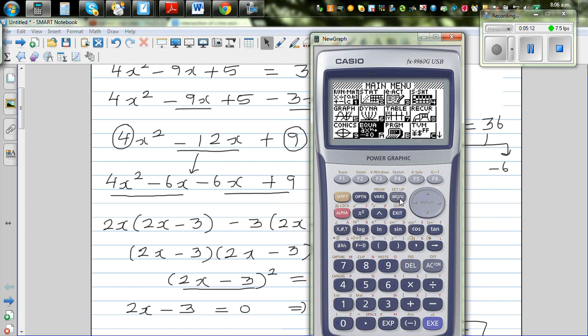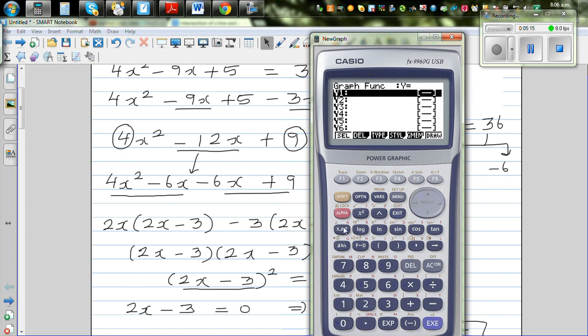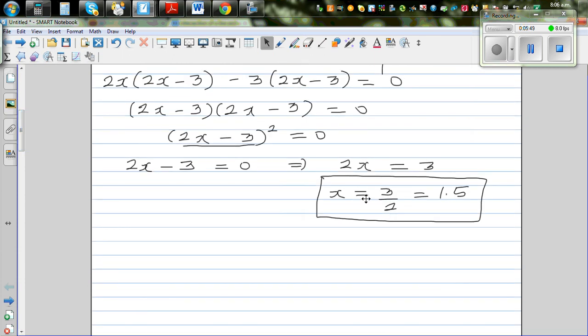If you want to understand this graphically, if you graph this equation. If you type in 4x squared minus 12x plus 9, this will be a parabola which is just passing through 1.5. If you go gsol and the root, can you see this is a parabola which is just passing through x equals 1.5, on the x axis 1.5. That's why you have got only one solution.